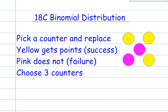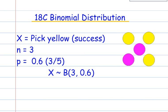So let's pick a counter and replace. That keeps it independent. We have five counters. Yellow gets points, so that's our success, and pink does not. We're going to choose three counters of the five. So X is our successful event, so in this case, picking yellow.